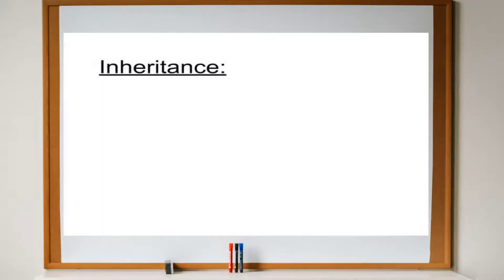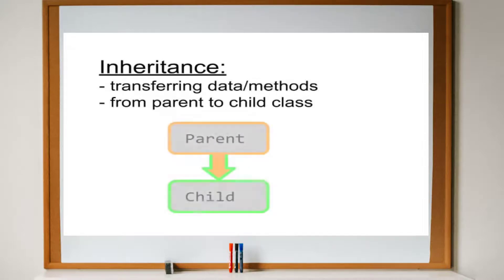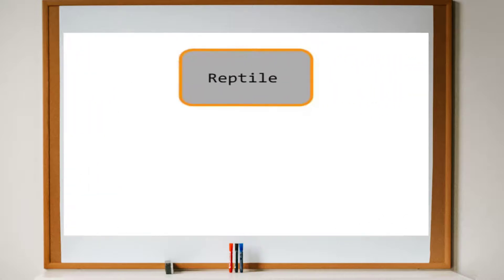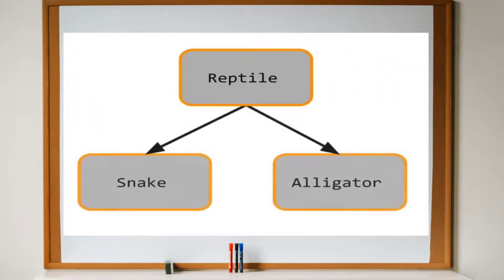Inheritance is the process of passing the attributes and behaviors of one class down to descendant classes. For example, you can start with a class like Reptile and have its descendants be Snake and Alligator. Although Snake and Alligator have different attributes and behaviors, both classes are derived from the same Reptile class.